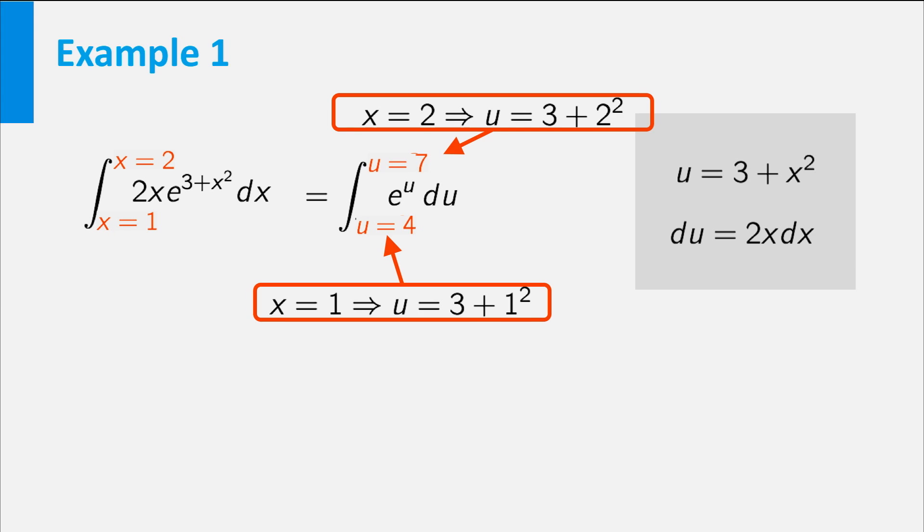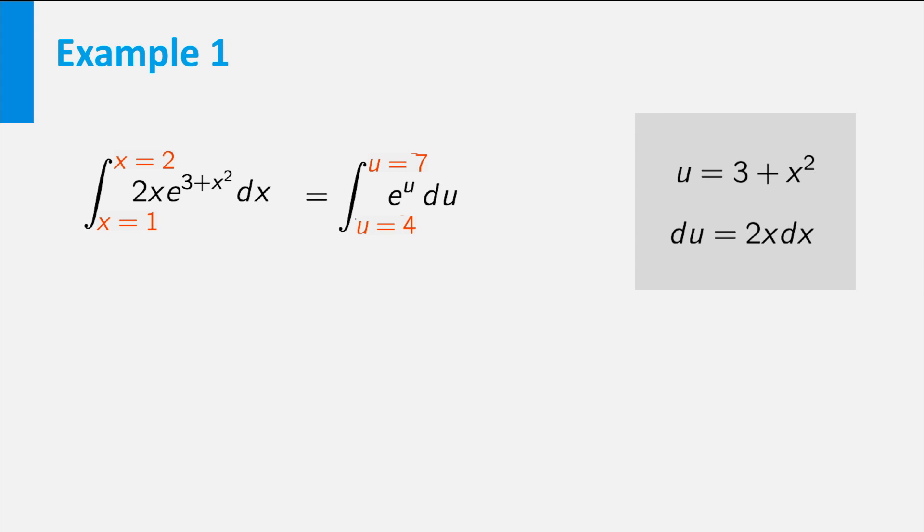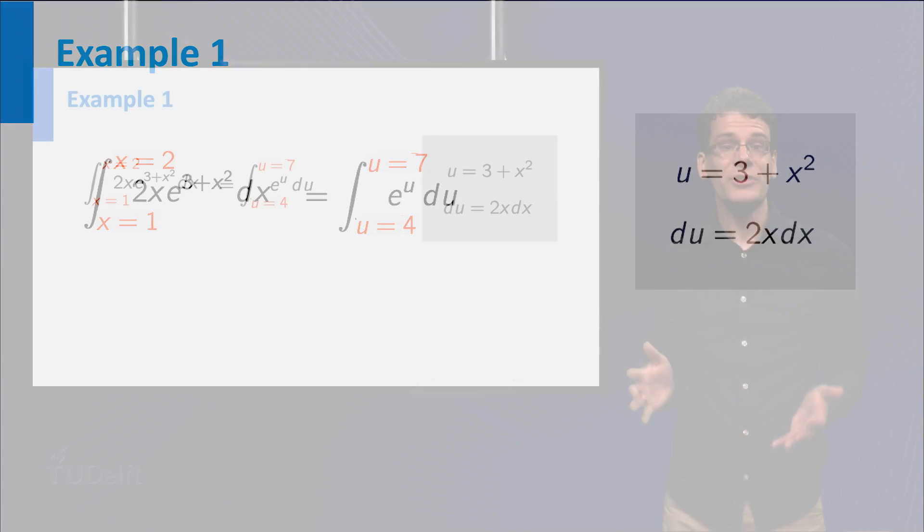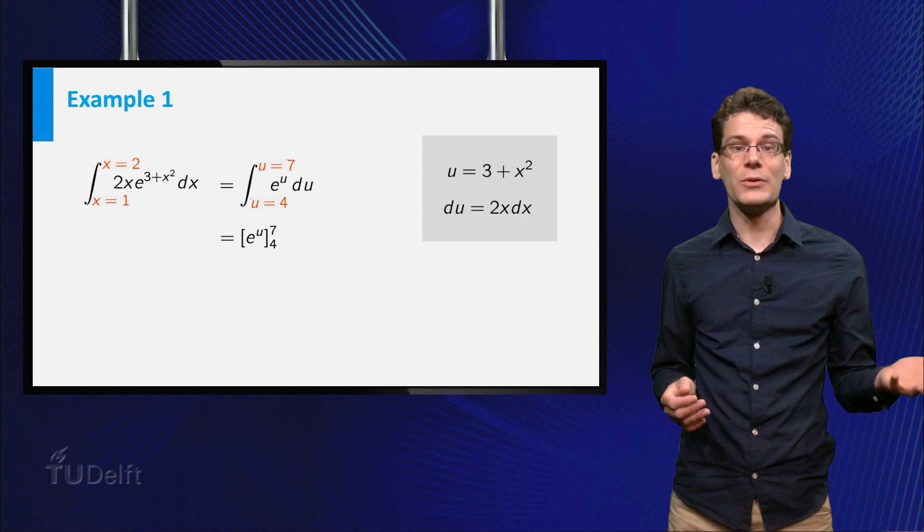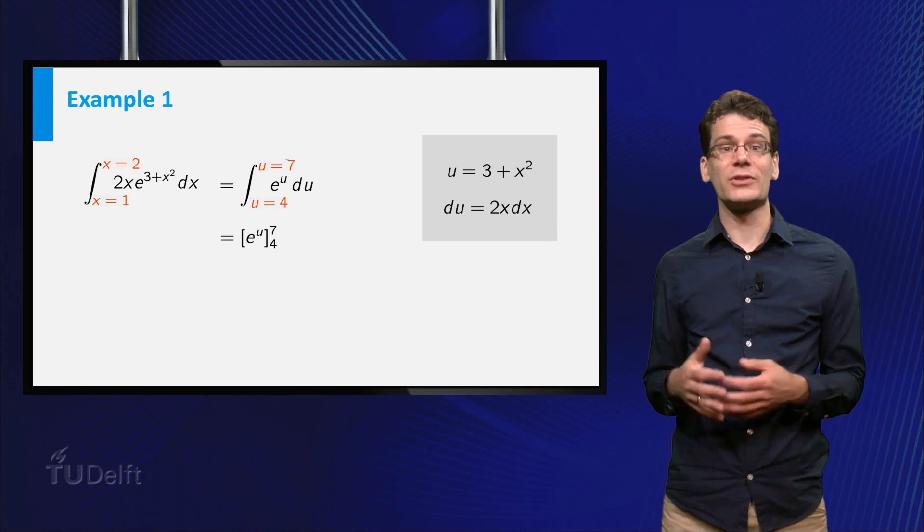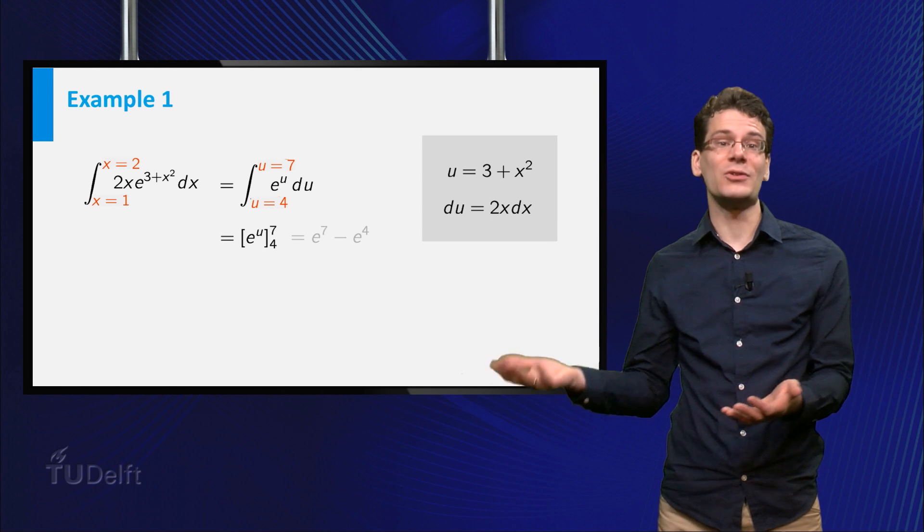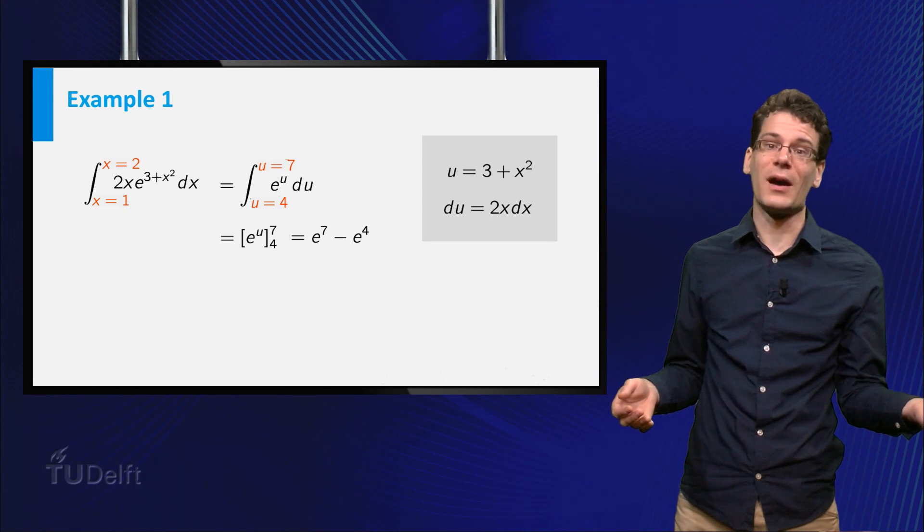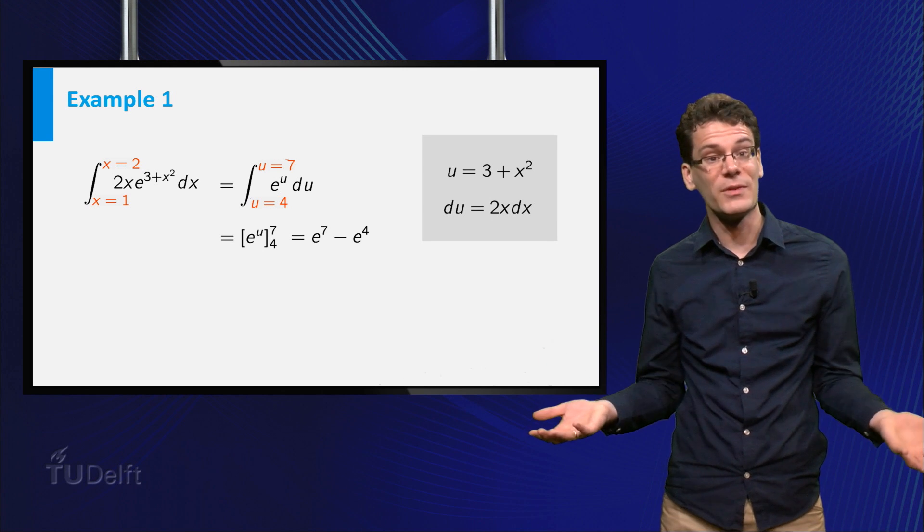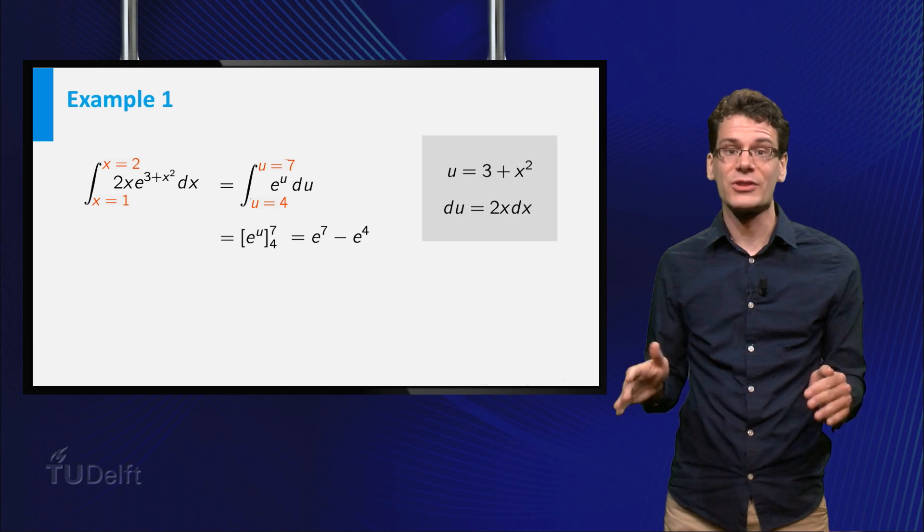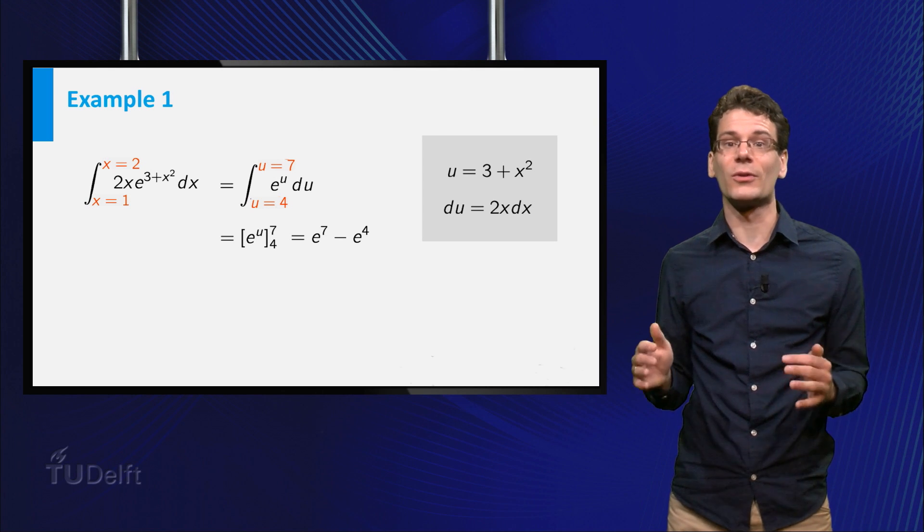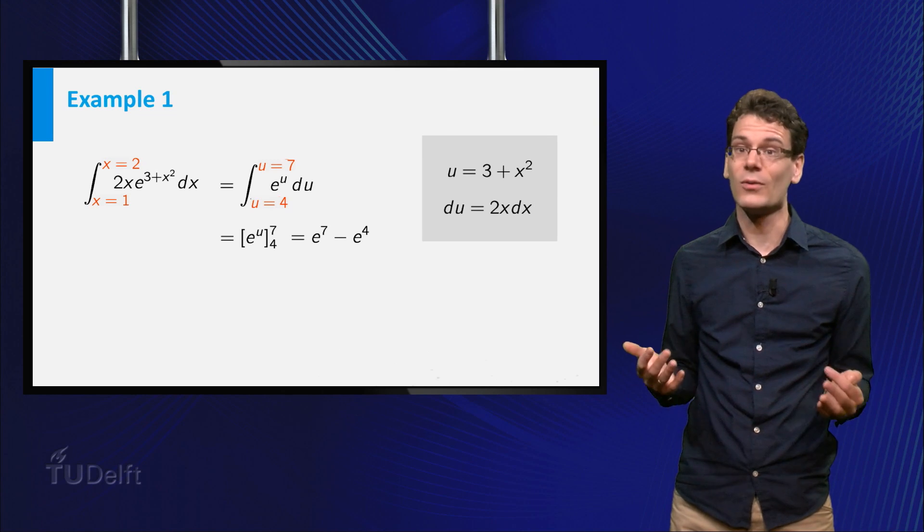So the new integral becomes e to the power u du with u ranging from 4 to 7. This we can easily calculate. A primitive function is e to the power u. Now plug in the boundaries and subtract. We get e to the power 7 minus e to the power 4, the same answer as before. There is no need to return to the original variable x. The value of the new integral is just the same as the value of the old one.